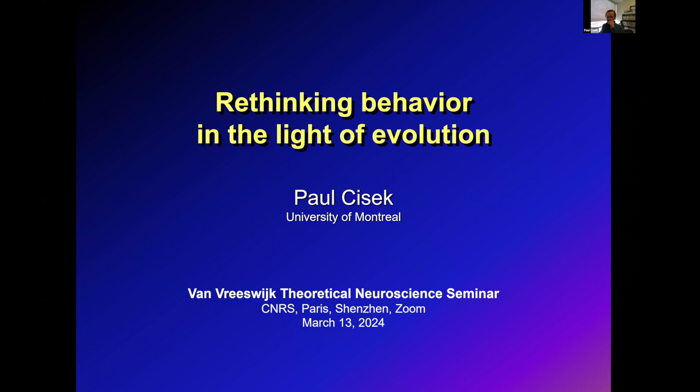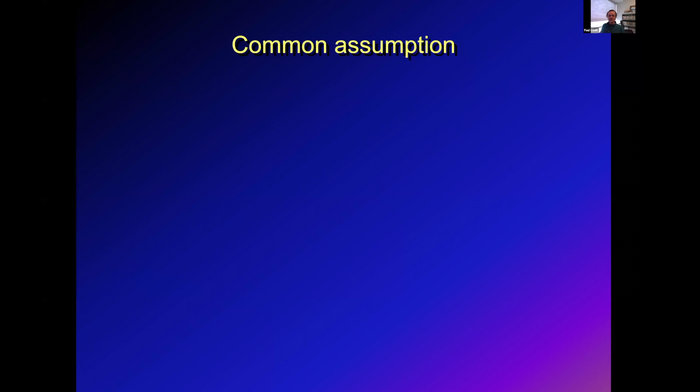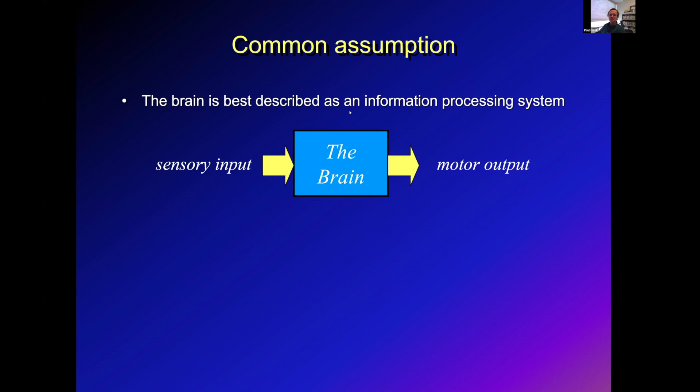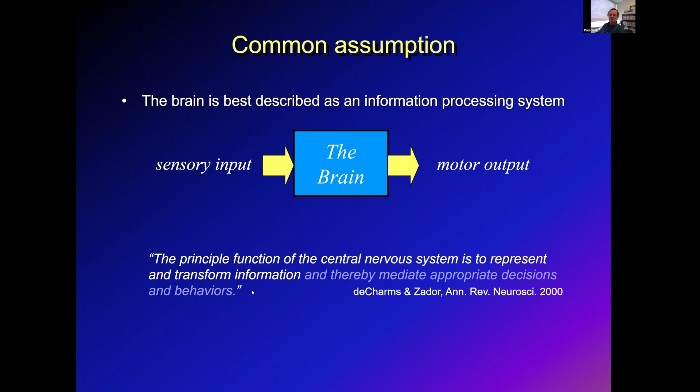I'm going to start with a common assumption in the field, which is that the brain is best described as an information processing system — a system that takes information from the outside world, builds knowledge, makes decisions, and produces some kind of motor output. The principal function of the central nervous system is to represent and transform information. This is a common way of describing what the brain does.